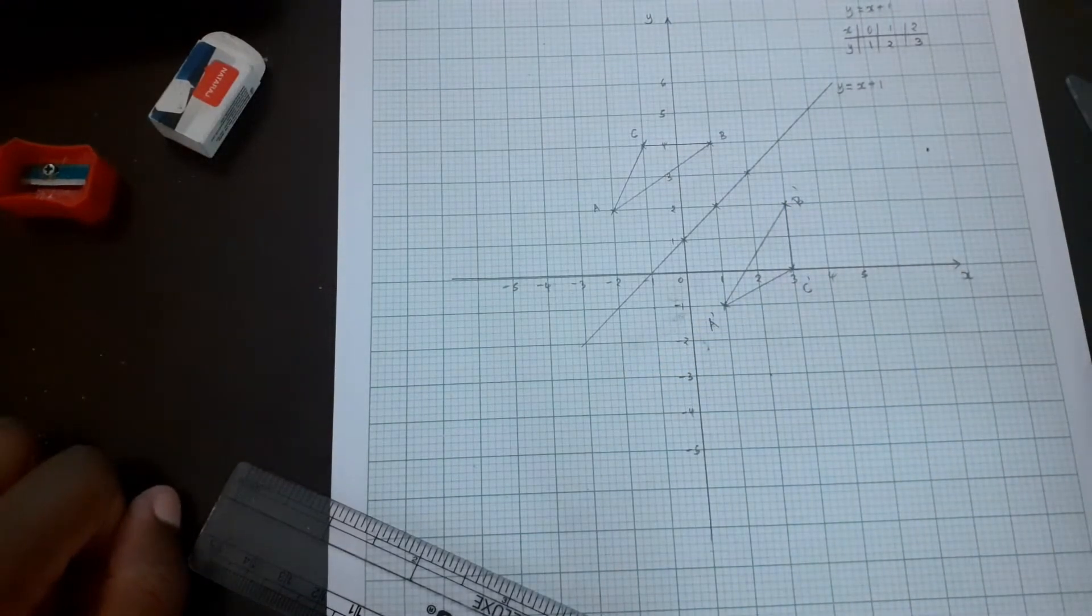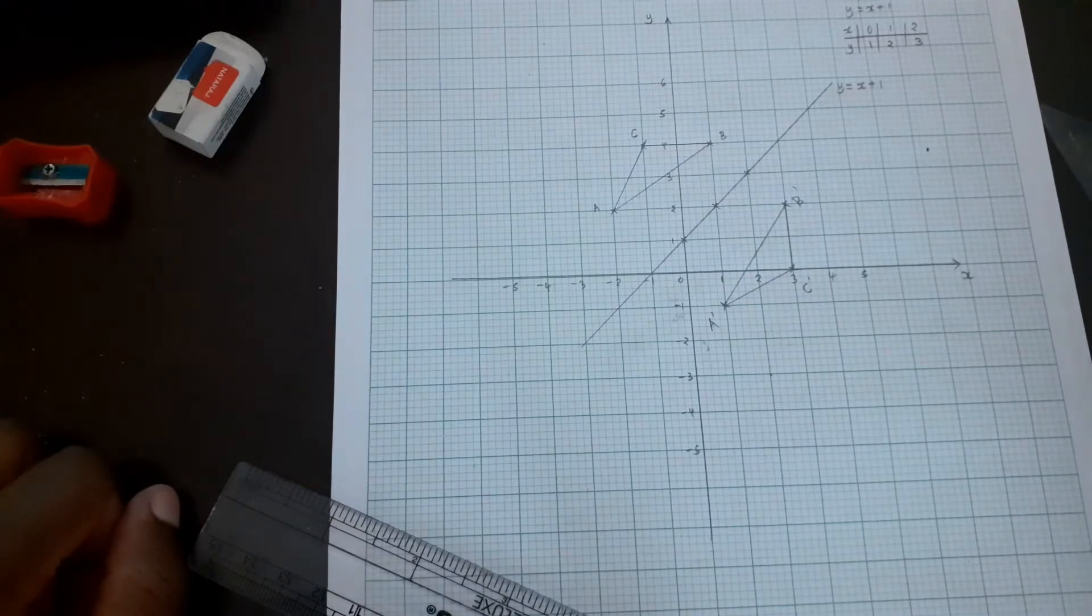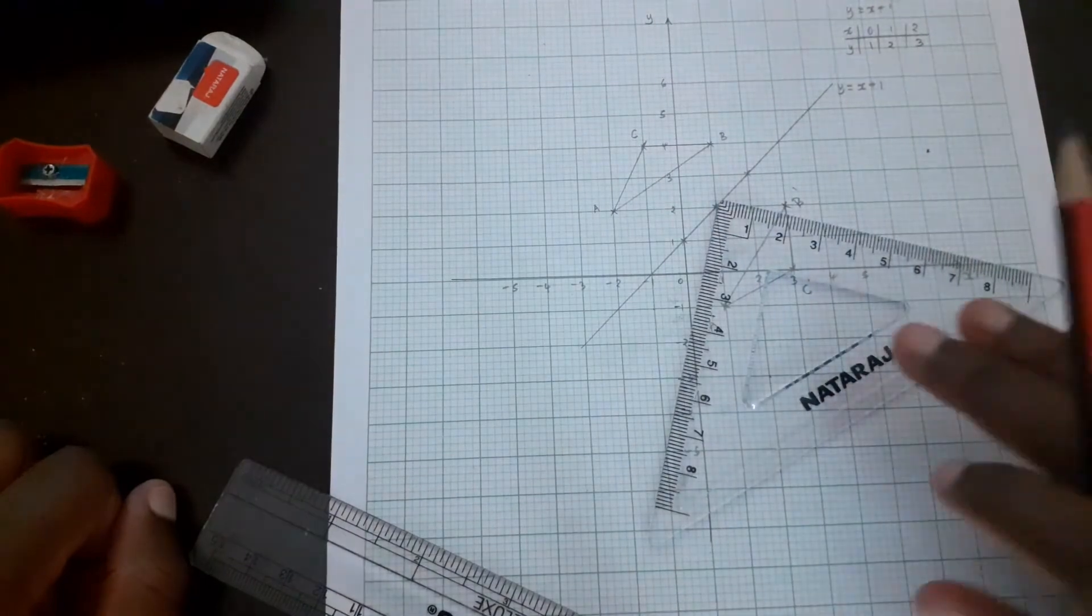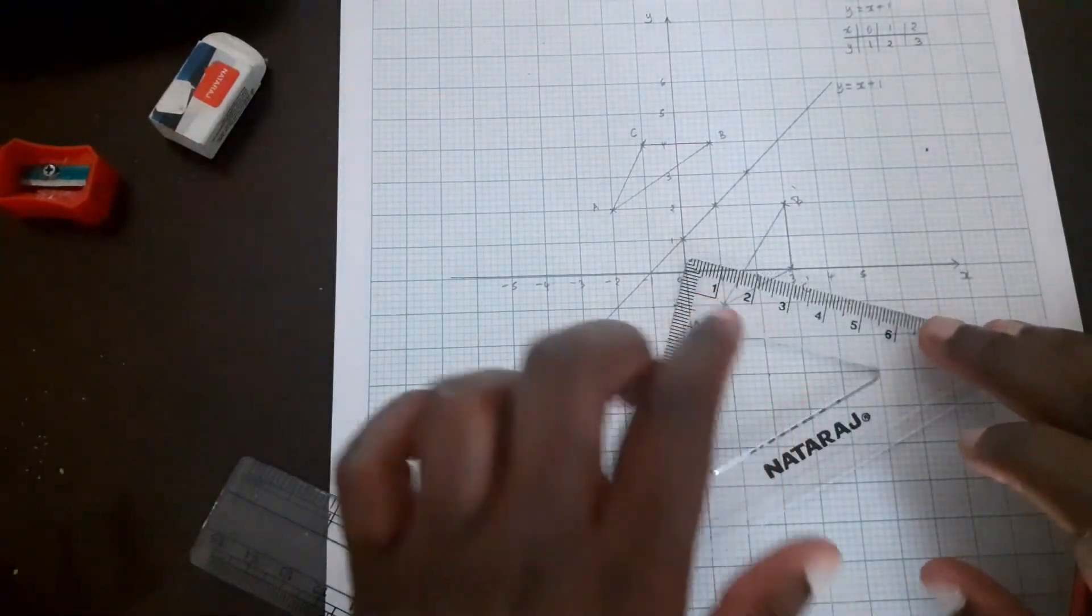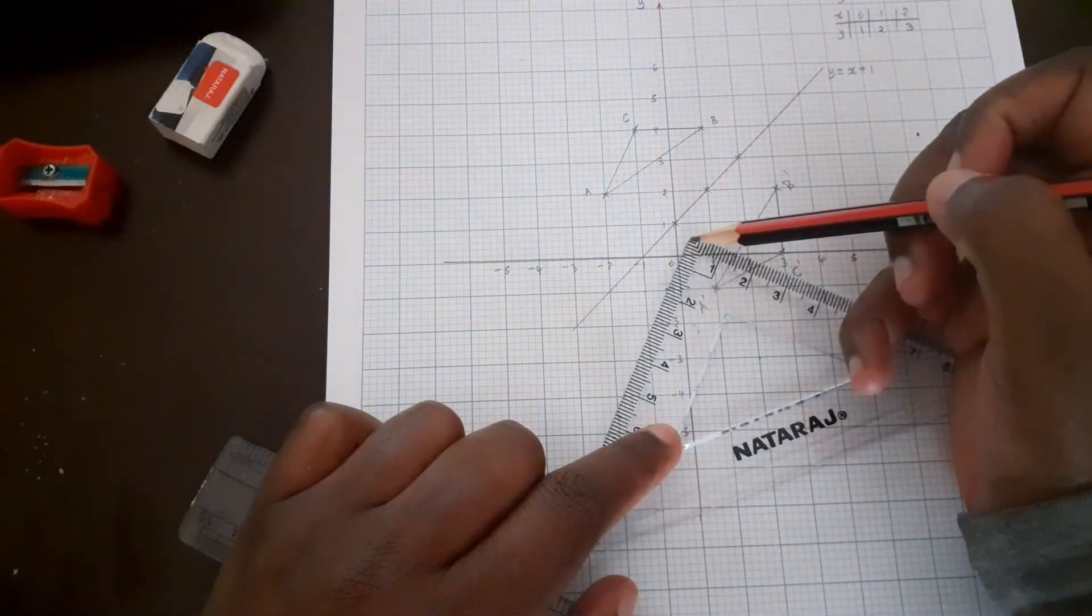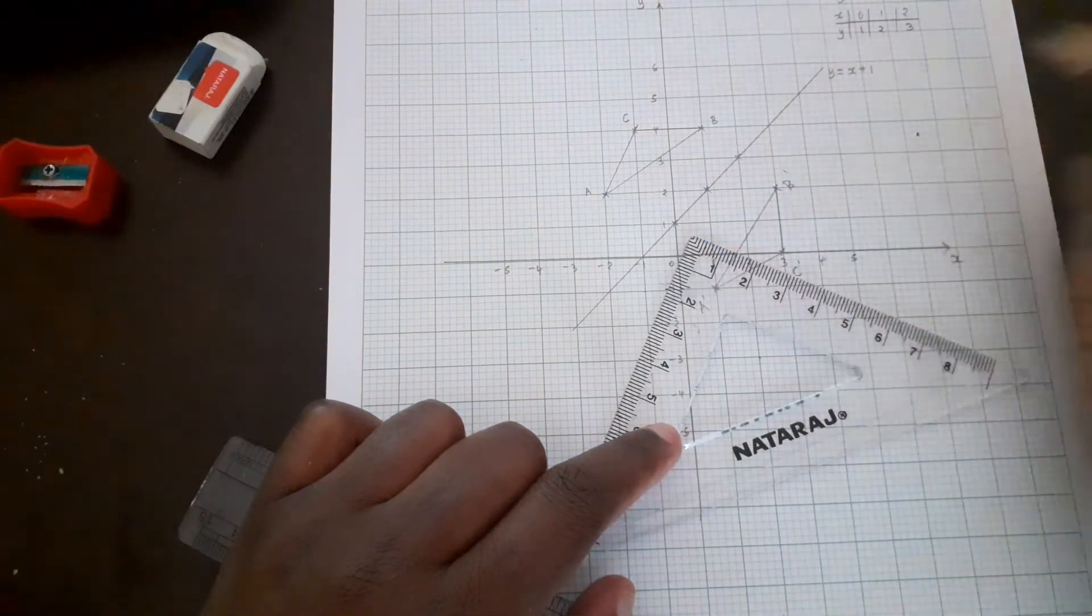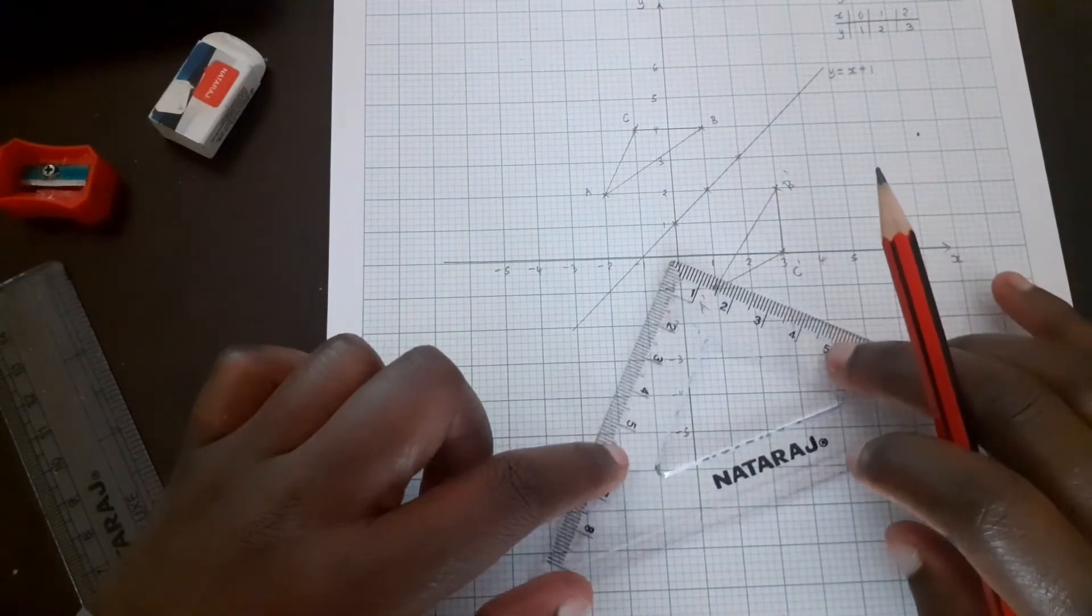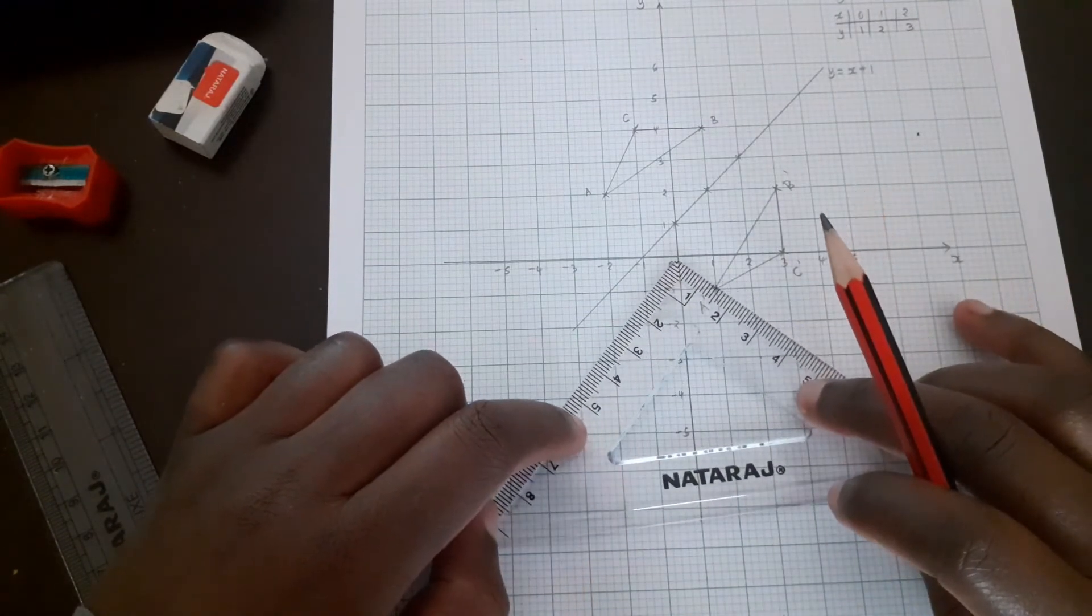The easiest way to do it is using the set square - the 45-degree set square. The pointed tip or the center of the 90-degree angle should be at the origin or where the turn happens, which is (0,0).